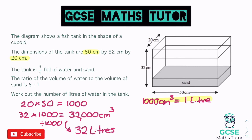The next piece of information says the tank is three quarters full of water and sand. If we find three quarters of 32, we find out the total quantity of water and sand. We divide by 4 and times by 3: 32 divided by 4 is 8, times 3 is 24. So we have 24 litres of water and sand. Converting to litres first made this easier than finding three quarters of 32,000.